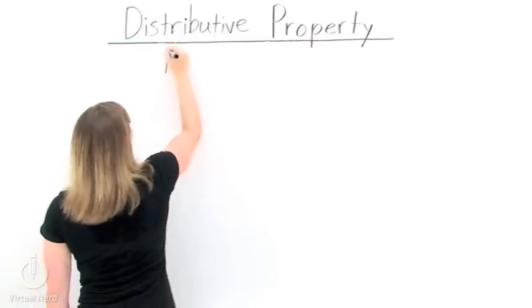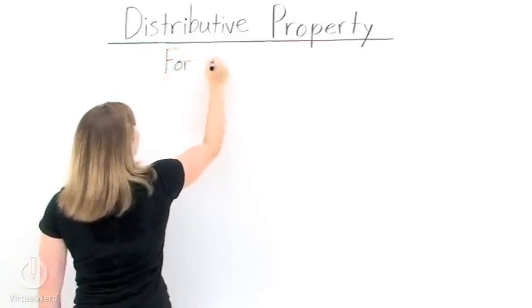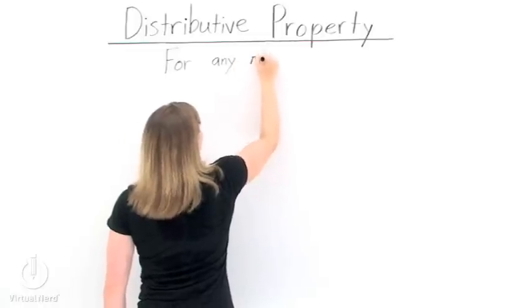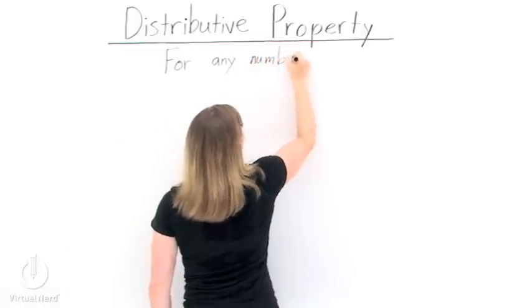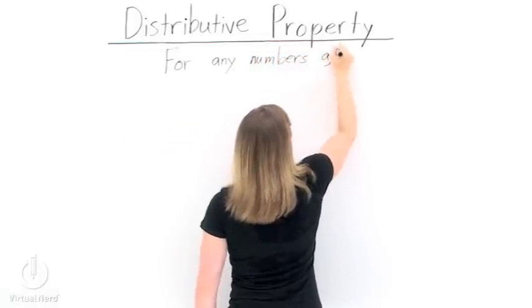In other words, the distributive property allows us to take a multiplication from the outside of a parentheses and distribute it into the inside of a parentheses where we're doing adding or subtracting.